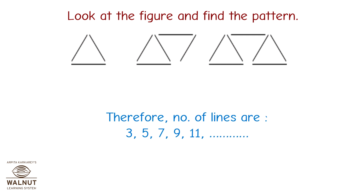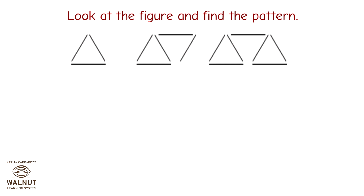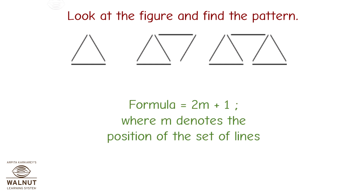Therefore, the number of lines are 3, 5, 7, 9, 11 and so on. The formula is equal to 2M plus 1, where M denotes the position of the set of lines.